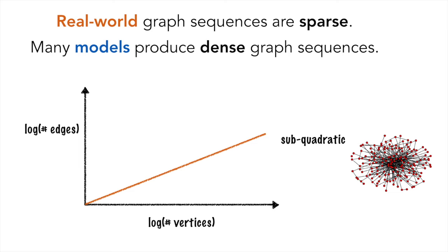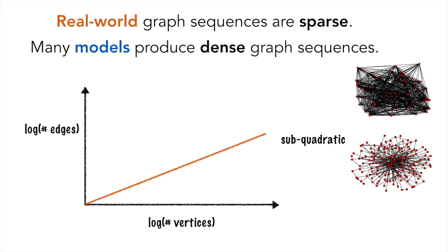But many popular probabilistic graph models are misspecified. Their graph sequences are dense with probability 1. That is, the number of edges grows quadratically with the number of vertices.